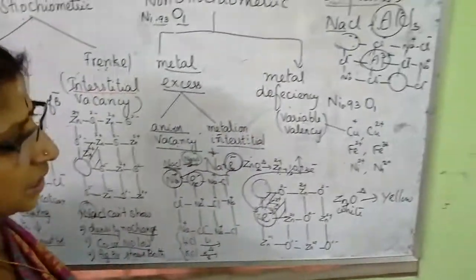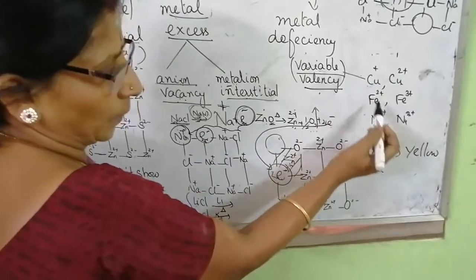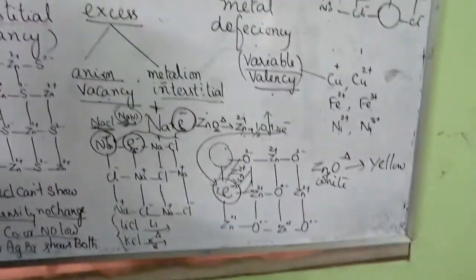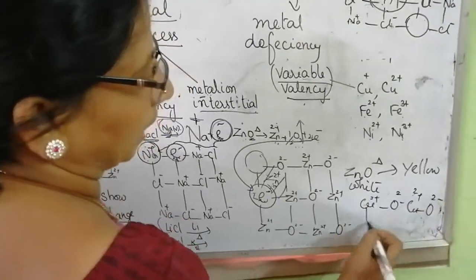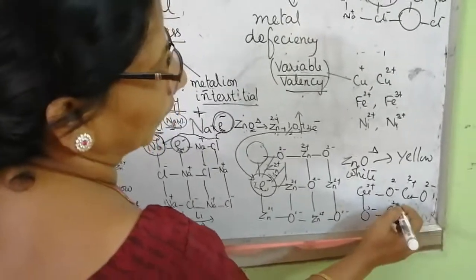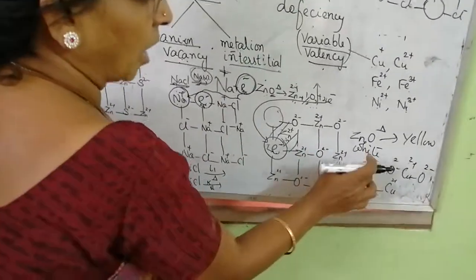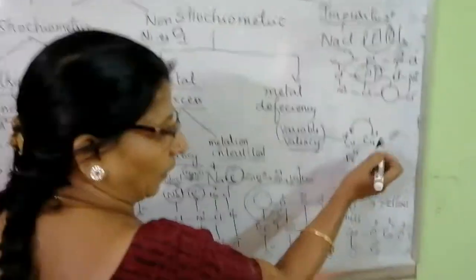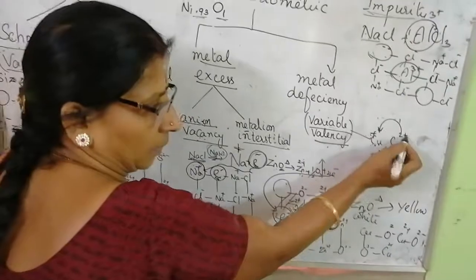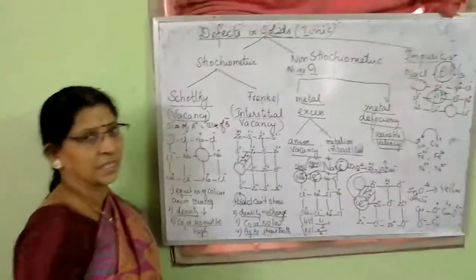Metal deficiency defect is caused by variable valence. For example, Cu⁺/Cu²⁺, Fe²⁺/Fe³⁺, Ni²⁺. In a crystal lattice of Cu²⁺ oxide (cupric oxide), if Cu²⁺ is to be replaced by Cu⁺ (cuprous), it must occupy two places to balance the charge. Two cuprous sites will be occupied by one cupric ion to maintain electrical neutrality. This type of defect is called metal deficiency defect. So we have covered all the defects present in ionic solids.